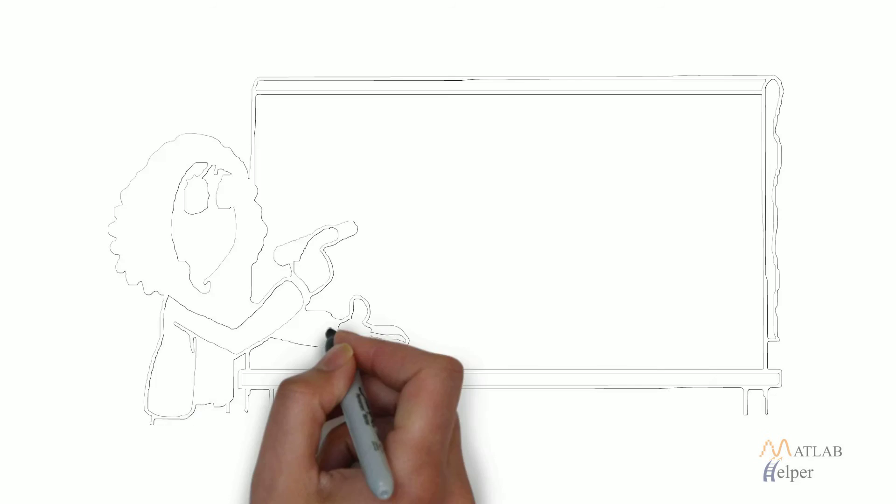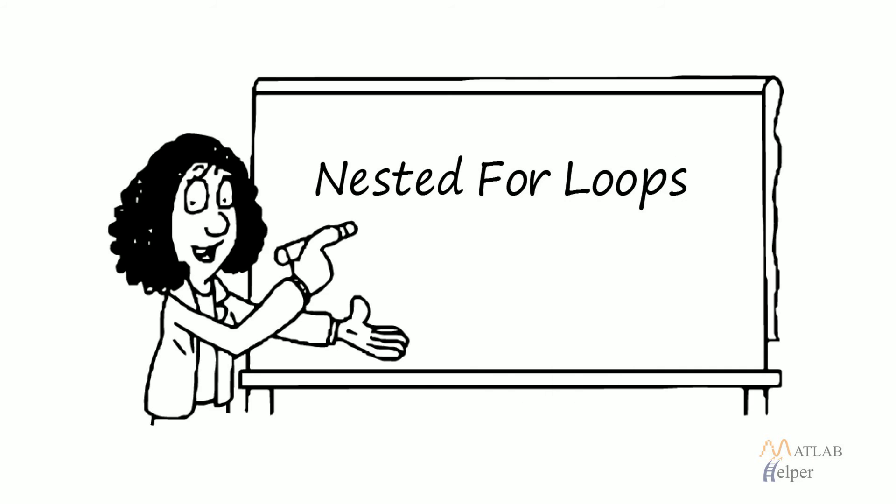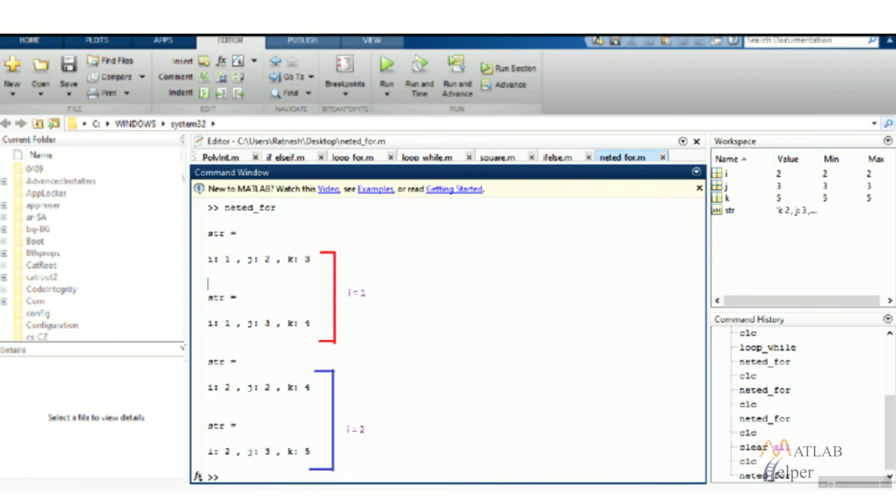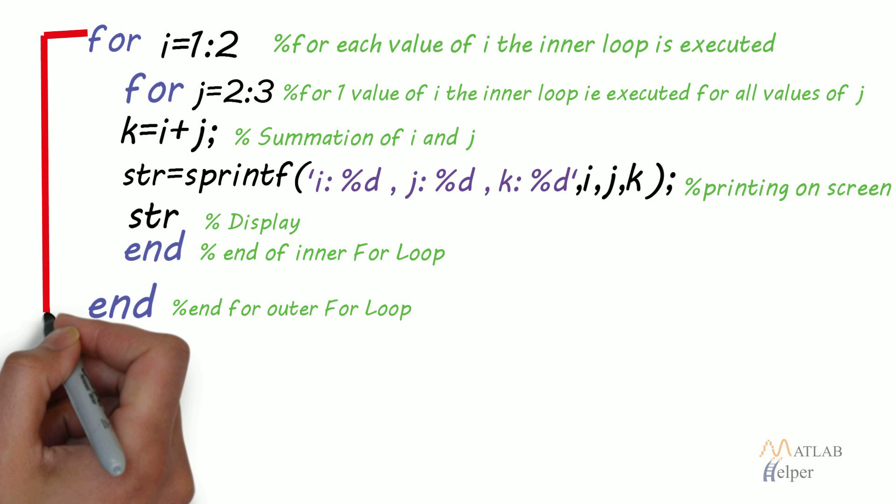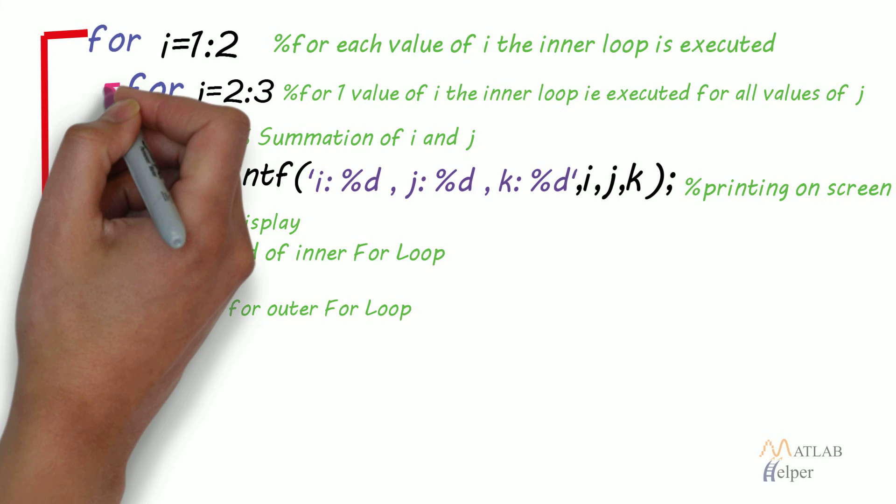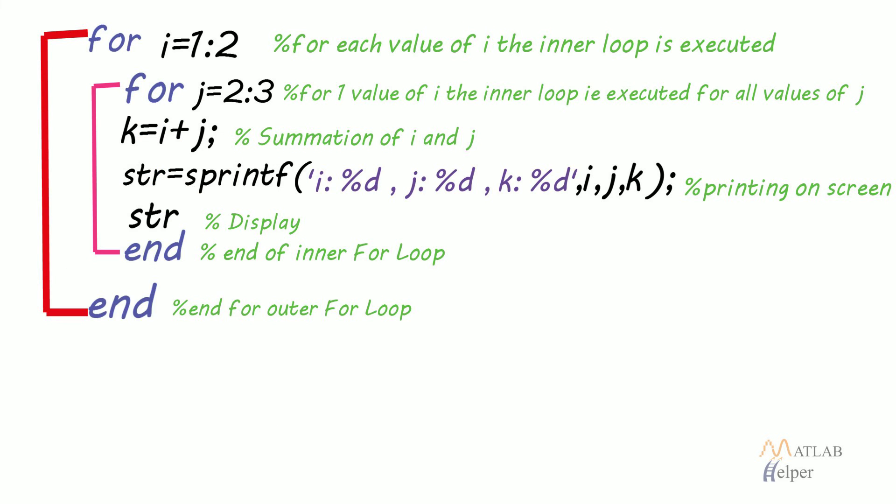Example 2: Nested for loops. In the given example, for each value of the outer loop, the inner loop gets executed for every value of the changing variable of the inner loop.